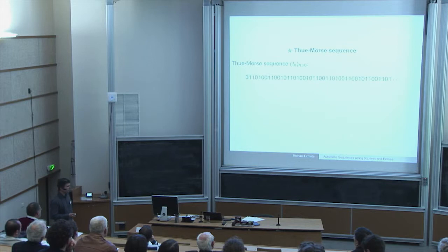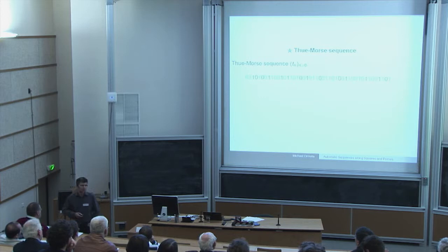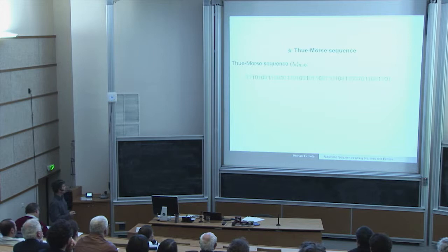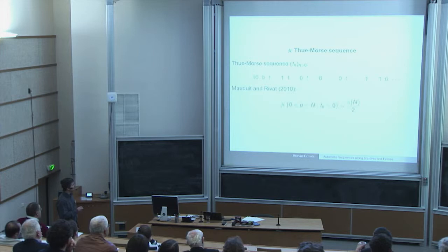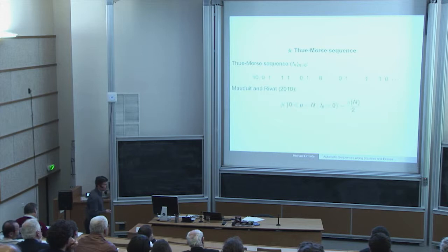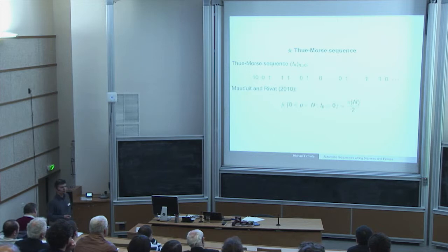It gets much more difficult and more interesting if you consider the subsequence of primes — the 2nd, 3rd, 5th, 7th, and so on. This was a conjecture by Gelfond, and was proved recently by Mauduit and Rivat, that if you consider the asymptotic frequencies of zeros and ones in this subsequence, they are again one half. So zeros and ones appear with the same frequency, giving a uniform distribution result for this subsequence.